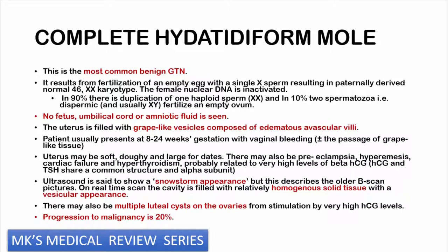Patients usually present between 8 to 24 weeks of gestation with a history of vaginal bleeding, plus or minus passing grape-like tissues from the vagina. The uterus is often soft, doughy, and large for dates — for example, appearing at 16 weeks when the patient is only 8 weeks. There may be features of early-onset preeclampsia due to elevated beta-HCG levels. There may also be hyperemesis gravidarum, cardiac failure, and hyperthyroidism. Remember, HCG has a similar structure to TSH — the alpha subunit is very similar — so beta-HCG can mimic TSH effects, causing hypertension before 20 weeks and excessive vomiting.